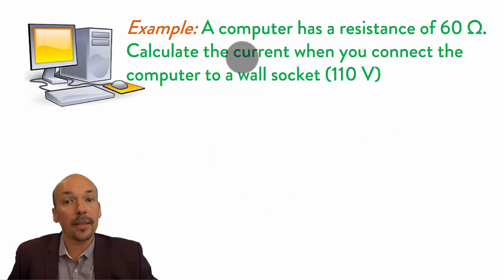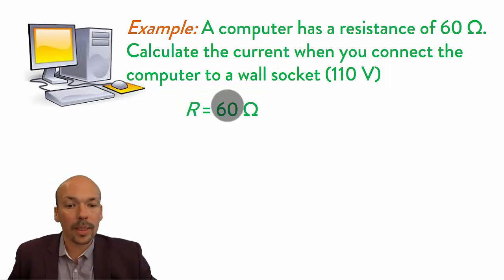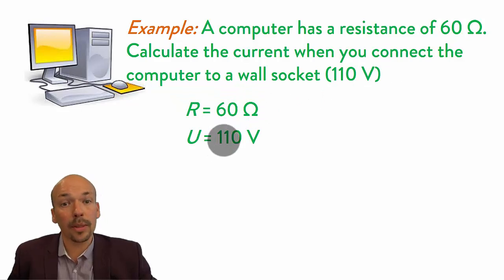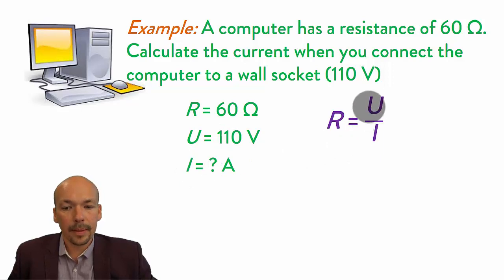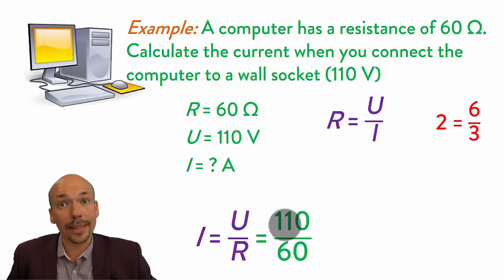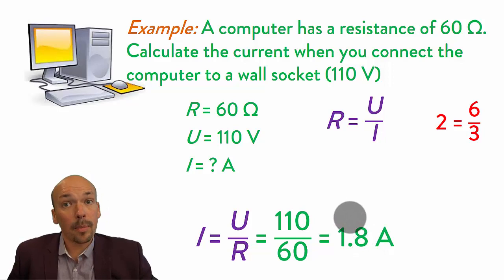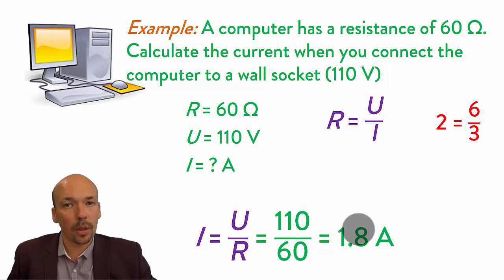Example: a computer has a resistance of 60 ohm. Calculate the current when you connect the computer to a wall socket of 110 volt. We know R = 60 ohm and U = 110 volt, and we need to find I. We rearrange the equation to I = U / R, so 110 divided by 60, giving 1.8 ampere. You could also calculate power now by multiplying voltage and current, but that was covered in a different video.